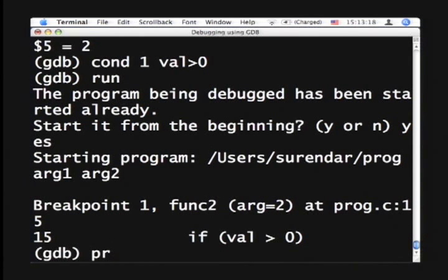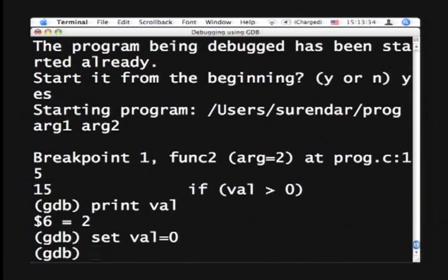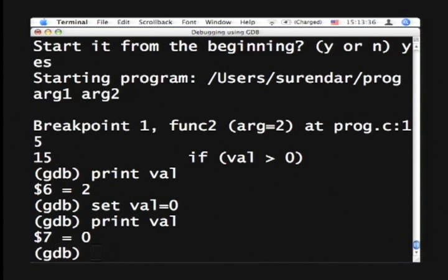So right now you look at the value of val and it happens to be 2. So you are supposed to go and change the code. But here is a quick and dirty way to see what happens if you had fixed the code. So you can say set val equals 0, which says that, so now if I do print val, it's 0. So this is the same as you changing the code and compiling and coming back again.